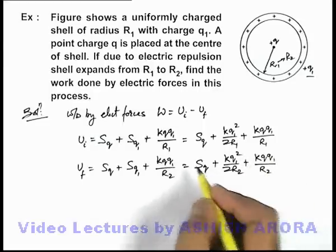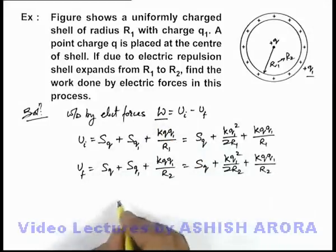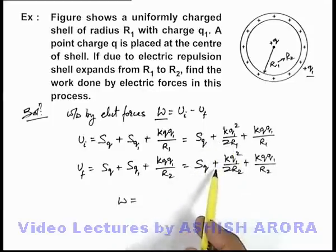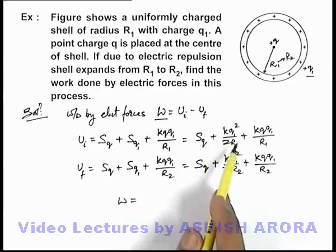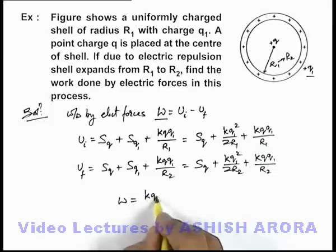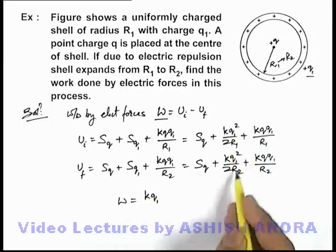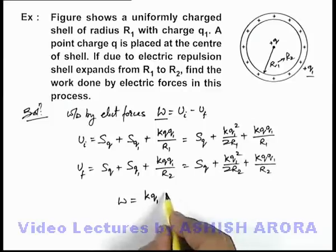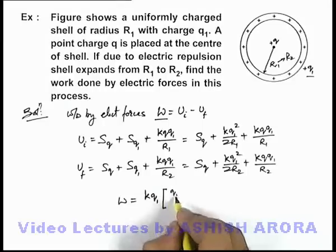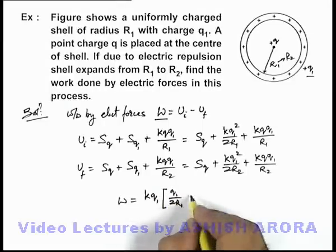In this situation from here we can easily find out the work done is Uᵢ minus Uf. We'll subtract these two terms. This Sq gets cancelled out. And finally we are getting k, q₁ we can take common in all these terms, and inside we can write from the first term it is q₁ by 2R₁ plus q by R₁.